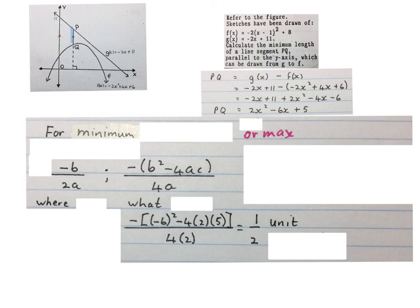If you wanted to find out for what value of x this PQ would have been a minimum, we work out the -b/2a. And that will equal to x = 1.5.